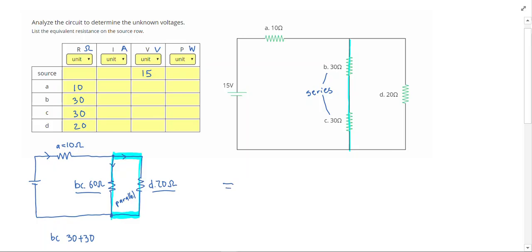Now I'm going to redraw the circuit. I still have resistor A that's 10 ohms. But now instead of BC and D, I'm going to combine all of those into one resistor that I'm going to call resistor BCD. Now since they're in parallel, I have to use the parallel equation. So for BCD, I know that I'm going to do 1 divided by 1 over 60 plus 1 over 20.